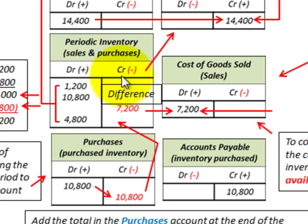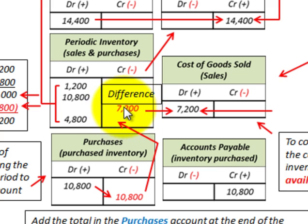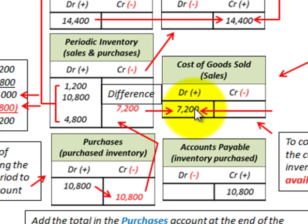Looking at our inventory account, we credit out $7,200 of inventory determined to be our cost of goods sold. This calculation is made at the end of the period — not for each and every sale, only periodically. We credit periodic inventory for $7,200 and debit cost of goods sold for $7,200.